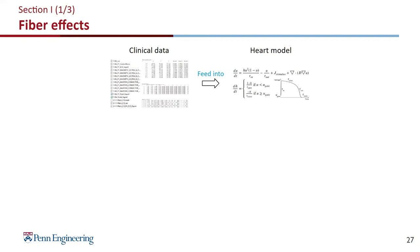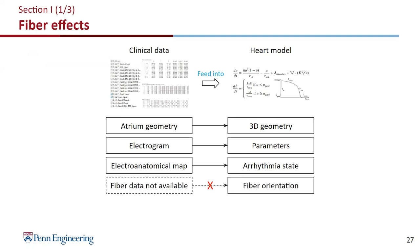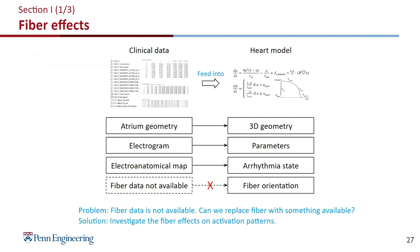Let's dive into section one. In order to tune our heart model to patient-specific, we need patient-specific parameters. From clinical data we have a lot of data that can transform into heart model components — for example the 3D geometry, heart parameters, and arrhythmia states. But there is one problem: we do not have fiber data in the clinical setup, but that's required in a heart model. We don't want to introduce new equipment or procedures in the operating room, so we think: how can we compensate for the lack of fiber? In order to do that, we need to first learn about the fiber effects on activation patterns.